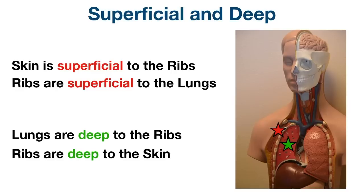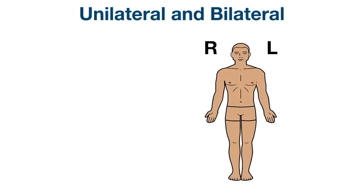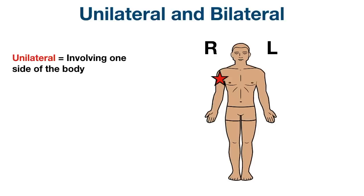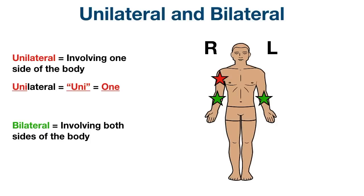Next, we have unilateral and bilateral. Unilateral involves one side of the body — for example, a rash involving only the right arm would be a unilateral rash involving the right upper extremity. The prefix uni means one or single, which helps you remember unilateral involves one side. Bilateral involves both sides of the body — for example, a rash involving both arms would be a rash to the upper extremities bilaterally. The prefix bi means two or double, which helps you remember bilateral involves both sides.